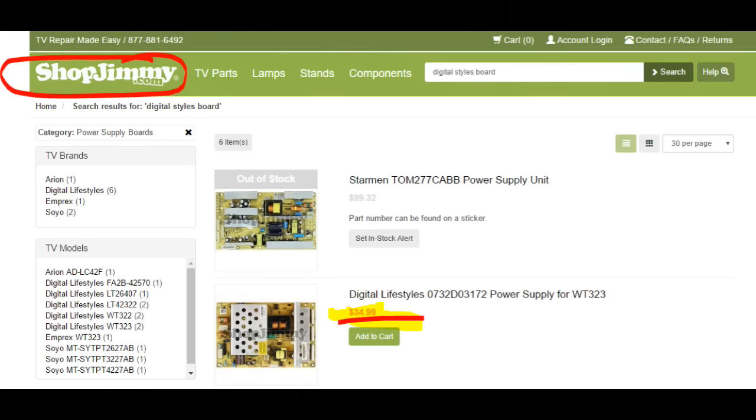Now, if you don't have solder or solder iron, or you don't know how to solder capacitors, then you may be interested in just ordering the board. The board's around 35 bucks. You just swap it out. It's really easy to do. And your TV should be up and running again.